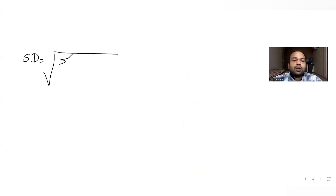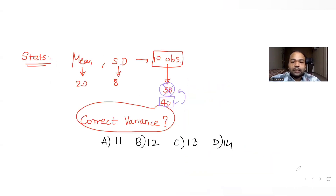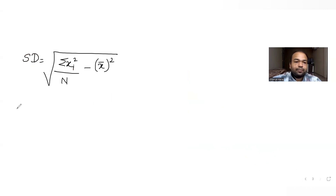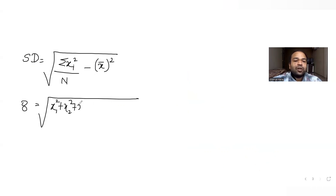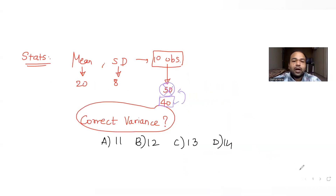Now let's talk about standard deviation. Standard deviation is given by the square root of (Σxᵢ²/n − x̄²). The standard deviation with incorrect observations is given as 8. So: 8 = √[(x1² + x2² + ... + x9² + 50²)/10 − 20²], where 50 is the incorrect observation and 20 is the incorrect mean.